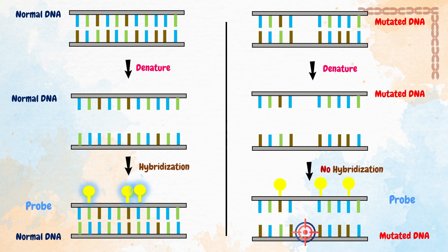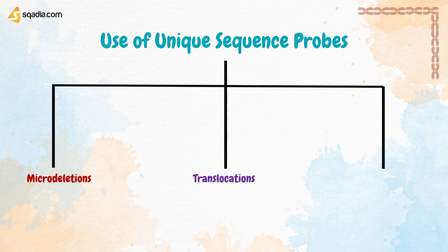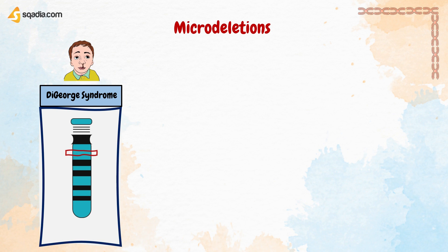Now let's discuss the use of unique sequence probes, which includes micro-deletions, translocations, and sex-chromosome rearrangements. First, micro-deletions: sub-microscopic deletions can be detected with fluorescent probes directed against one or more unique sequences within the interval suspected to be deleted. Micro-deletion probes are used in the diagnosis of DiGeorge syndrome at 22q11 — meaning chromosome 22, arm Q, band 11.